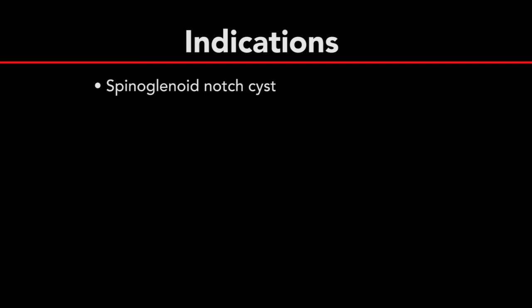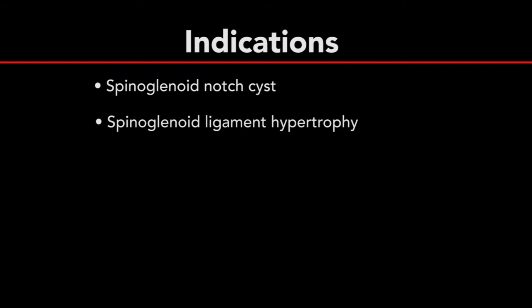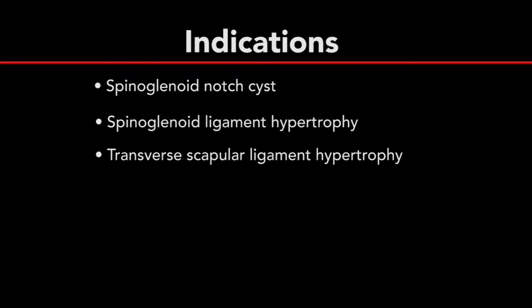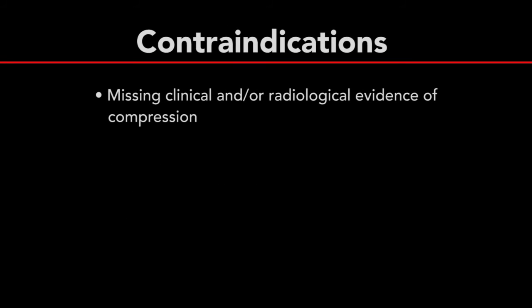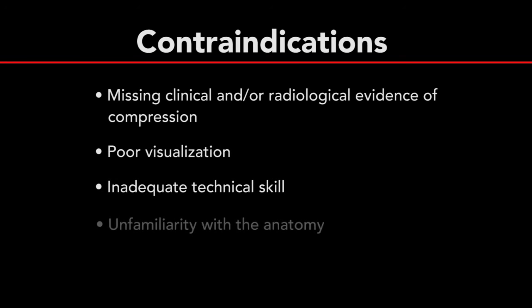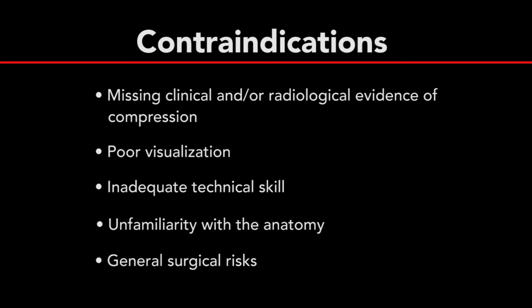Indications for arthroscopic decompression include spinoglenoid notch cyst, spinoglenoid ligament hypertrophy, transverse scapular ligament hypertrophy, suprascapular notch cyst, supraglenoid cyst, and paralabral cyst. Relative contraindications include missing clinical and/or radiological evidence of compression, poor visualization, inadequate technical skill, unfamiliarity with the anatomy and neuroanatomy, and general surgical risks.